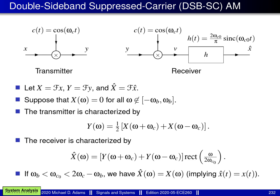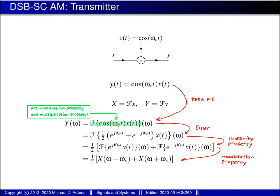Now let's use the Fourier transform to analyze the DSBSCAM system, beginning with the transmitter. The transmitter, with input x and output y, is characterized in the time domain by the equation y = x · cos(ω_c t). We want to take the Fourier transform of this equation. Let X and Y denote the Fourier transforms of x and y respectively.